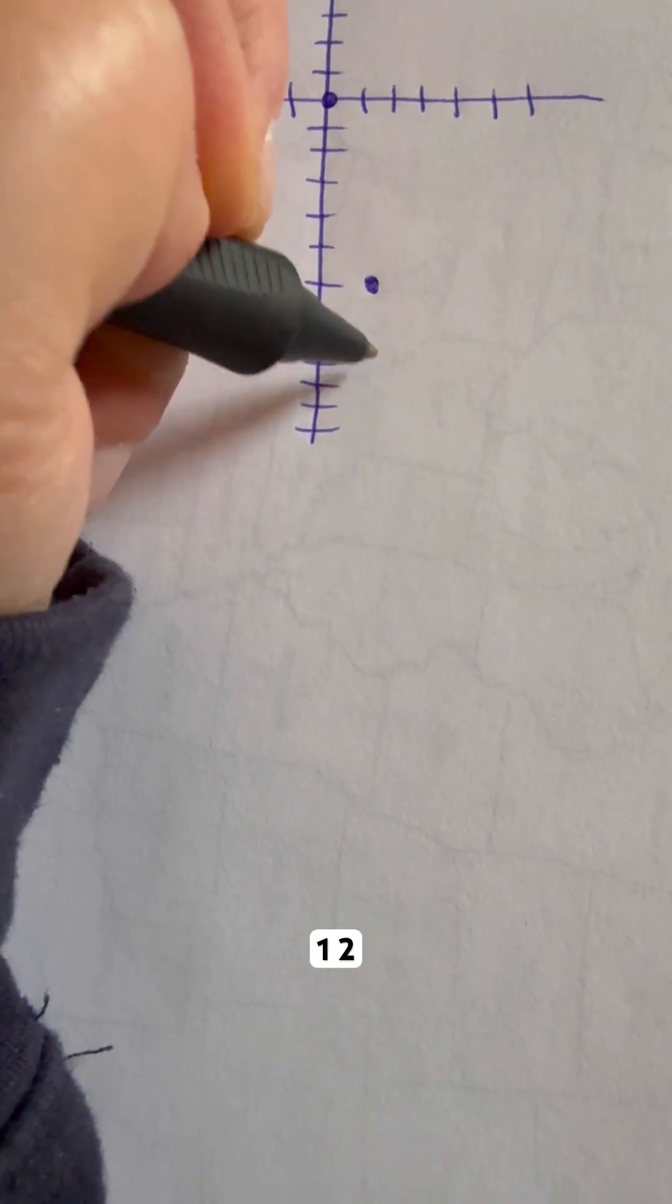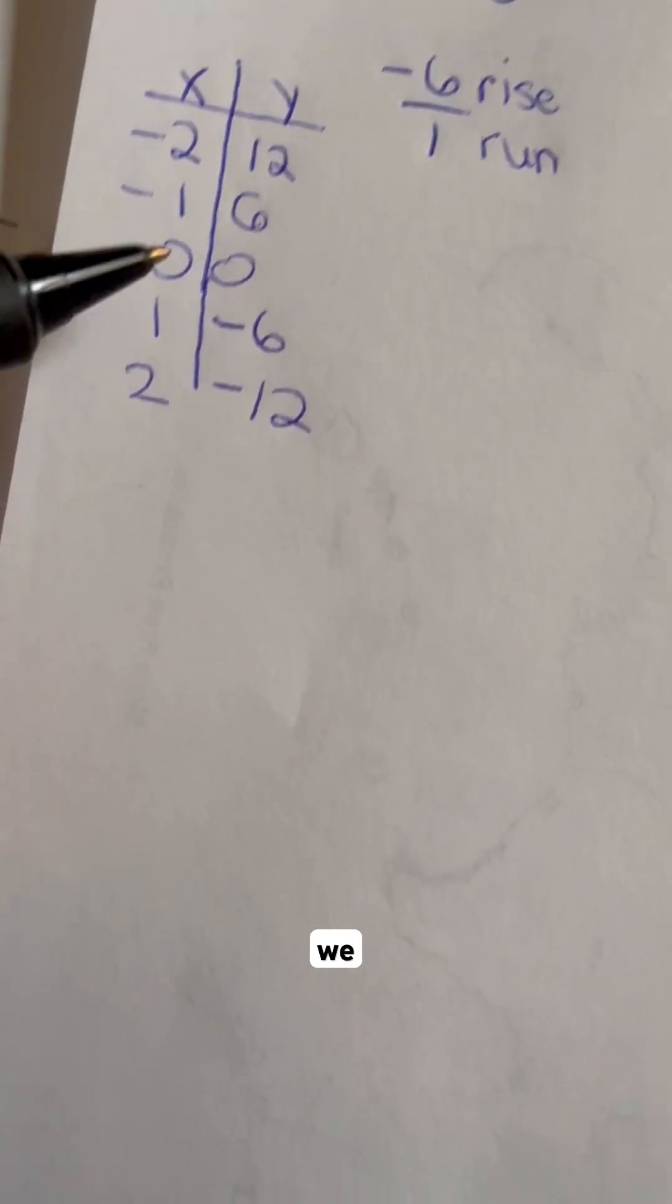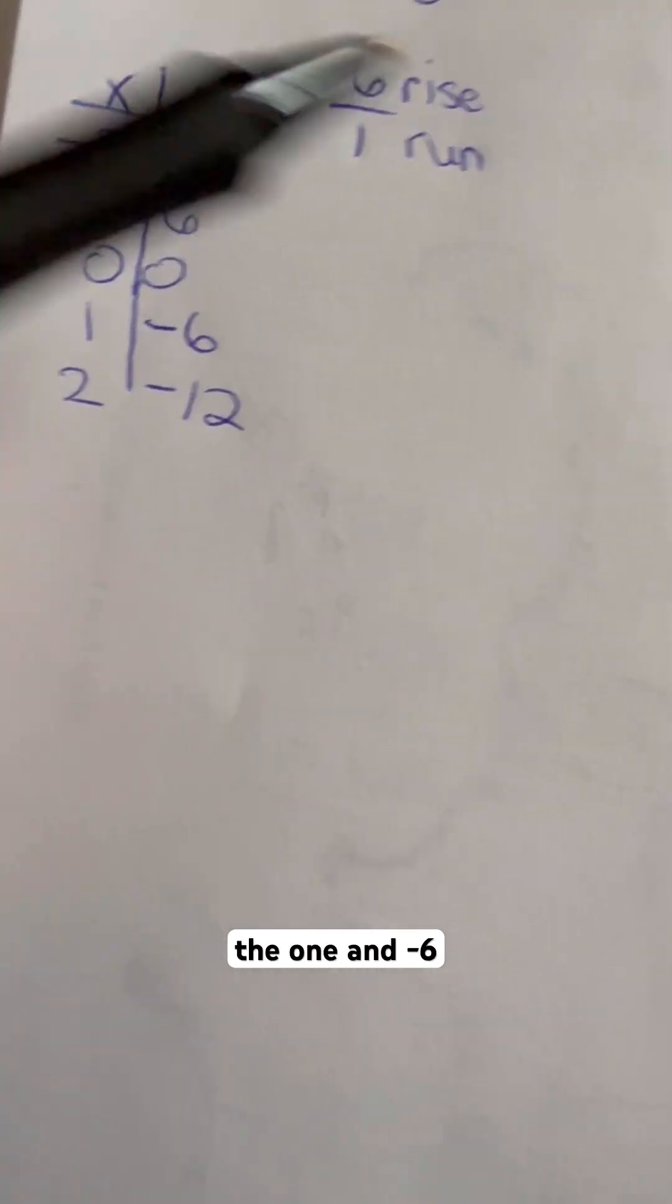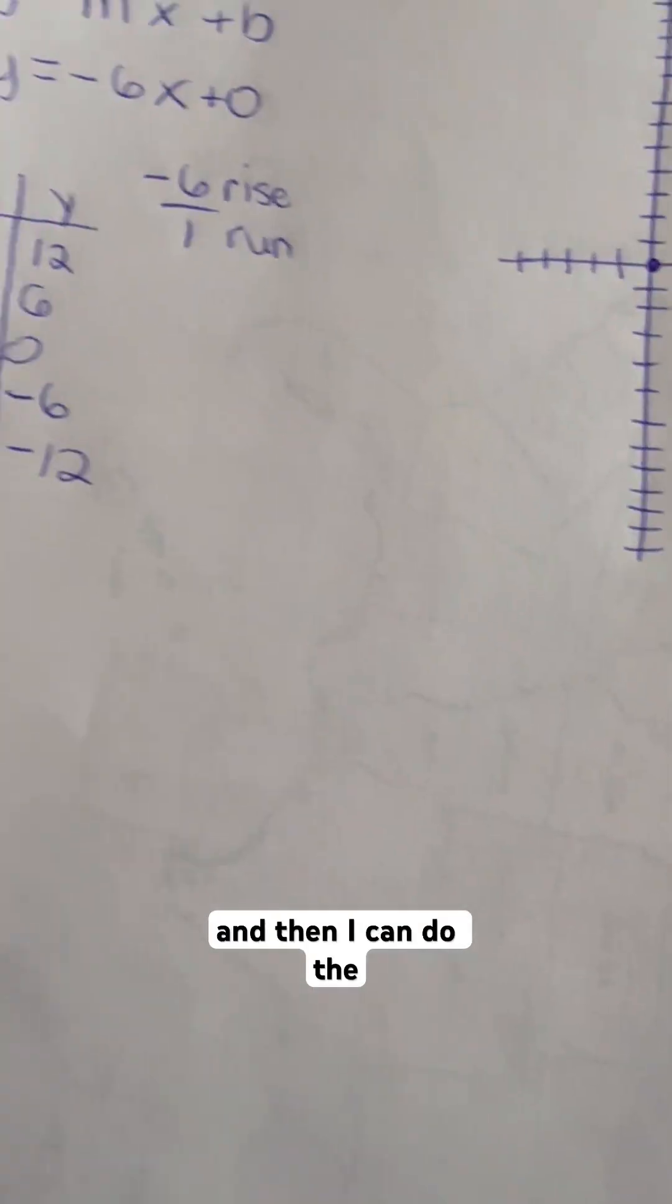Or I can continue. 1, 2, 3, 4, 5, 6 over 1. These are the same two points that we have right here. The 1 and negative 6 is right here. And then that 2 and negative 12 is right there.